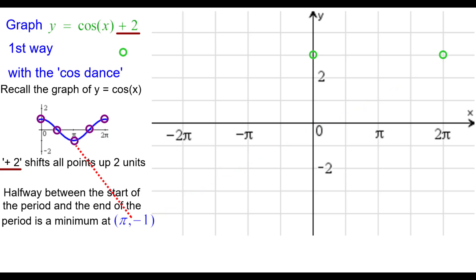And then halfway between the beginning of the period and the end of the period is a minimum at pi comma negative one normally. But we're adding two to all the y coordinates, so it will be pi comma positive one.